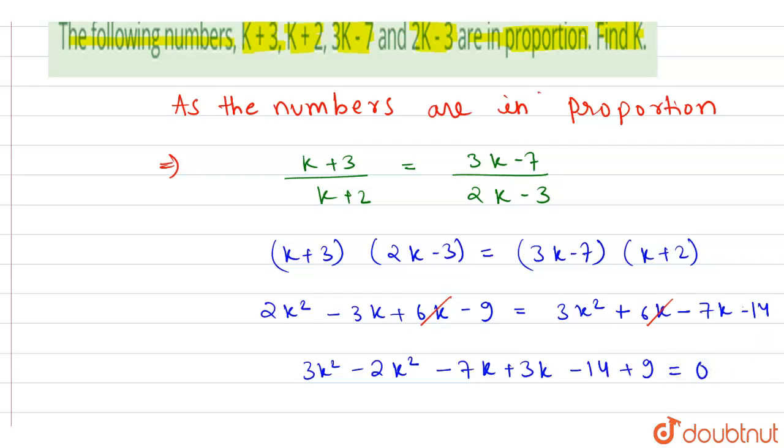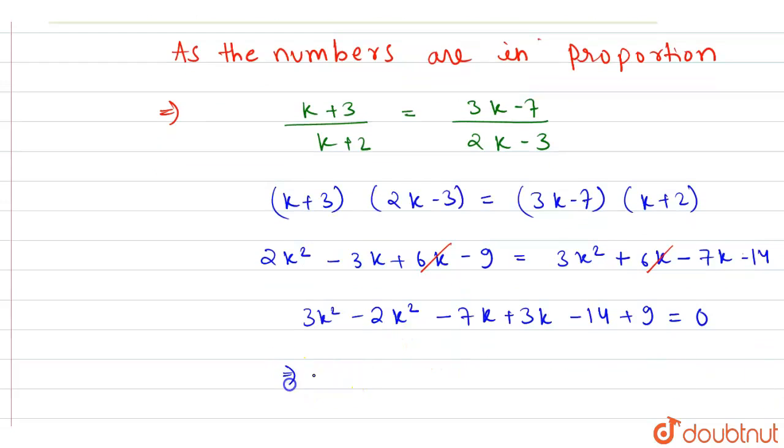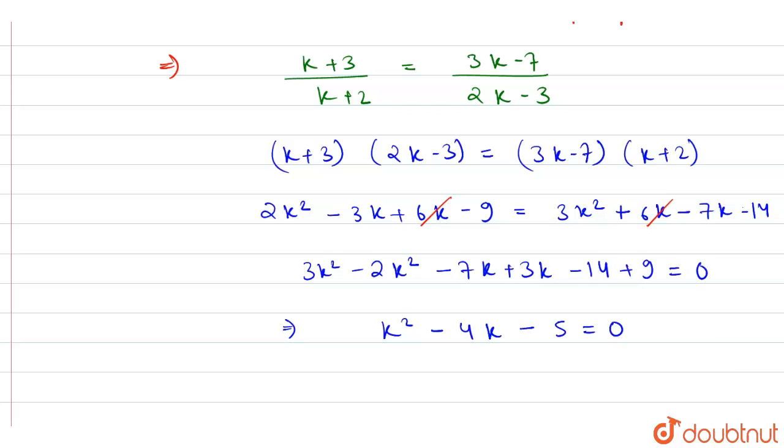So this will become K² - 4K - 5 equal to 0.